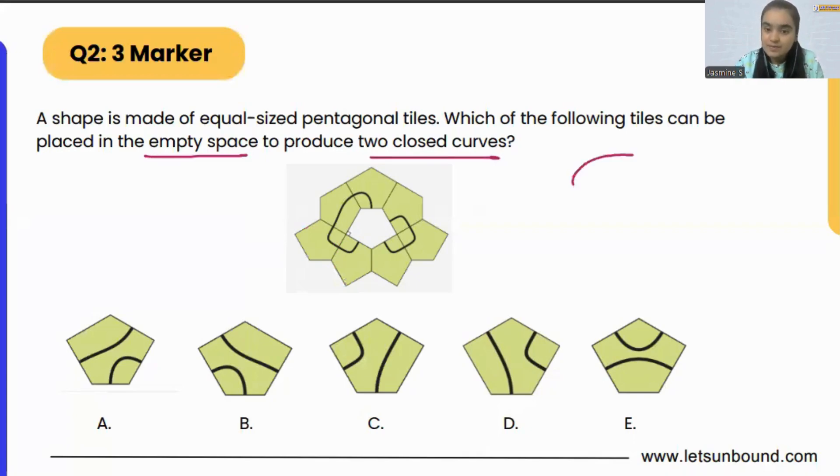So the curves have to be closed. They cannot intersect or they cannot be opened like this. They can't be opened. And there has to be two closed curves, so we cannot just make a single curve. That is also not possible. Now, if we see very carefully, we have to produce two closed curves, right? The first one can be this, and the second one can be this.